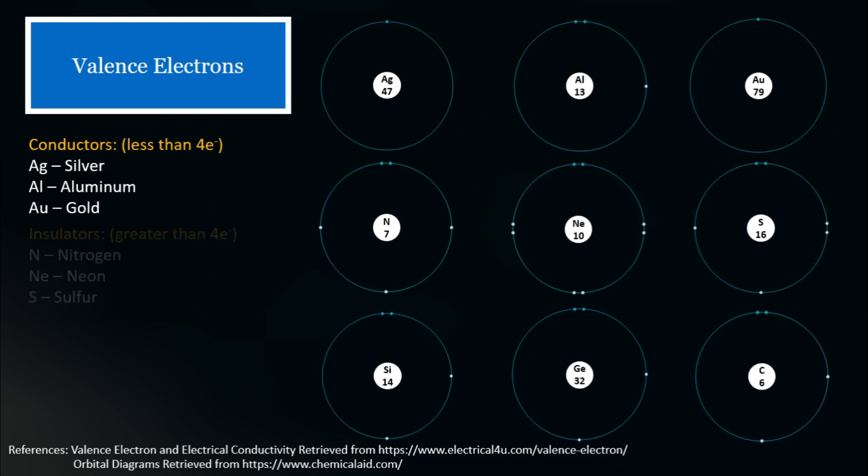We can also conclude that nitrogen, neon, and sulfur are insulators since the number of valence electrons is greater than 4. These elements are actually considered non-metals. That is why it is a bad conductor of electricity.